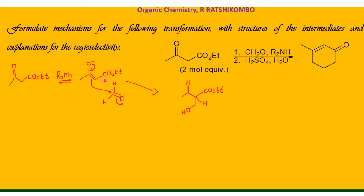Reacting this intermediate with base and H2O: the base will come and attack this hydrogen here, and as a result a double bond will be formed. The OH group will leave, and the product we get from this step will be this compound.